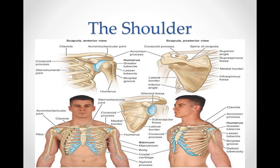The shoulder must be mobile enough for the wide range of actions of the arms and hands, but also stable enough to allow for actions such as lifting, pushing, and pulling. The compromise between mobility and stability results in a large number of shoulder problems not faced by other joints such as the hip.